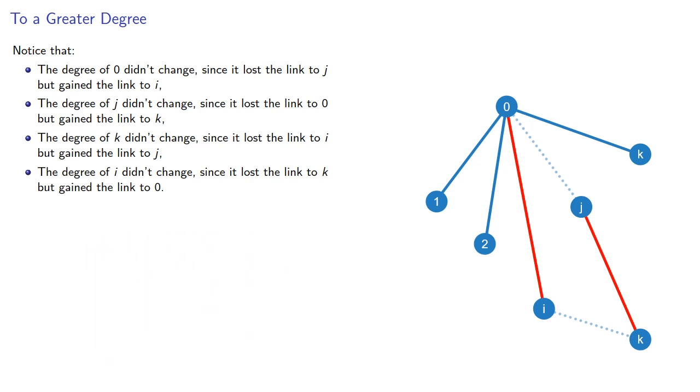And since the only changes were made among the vertices i, j, k, and 0, this means that all of the vertices have the same degrees as before, so our degree sequence is the same as before, except now the degree sum of the vertices adjacent to 0 is greater. Because, remember, the degree of i was greater than the degree of j.